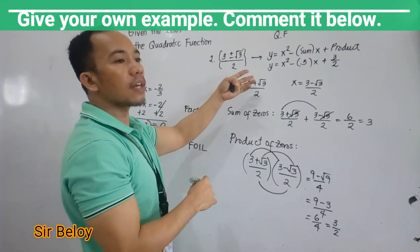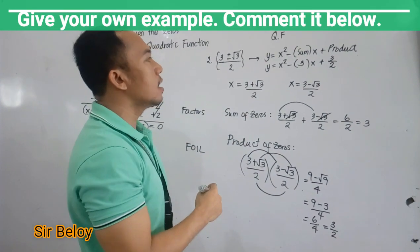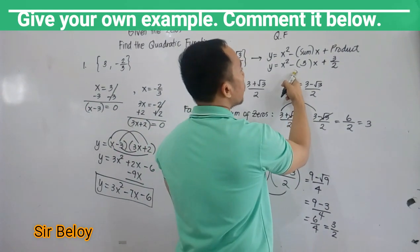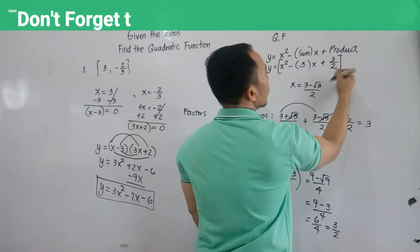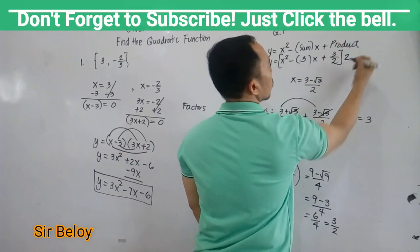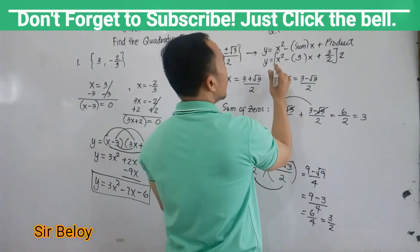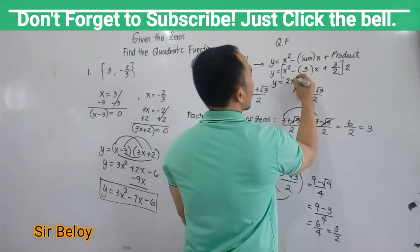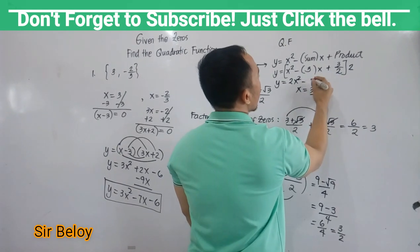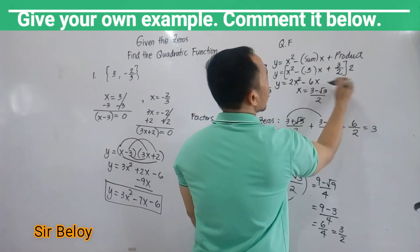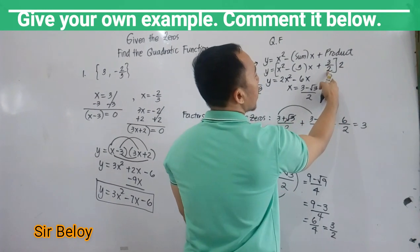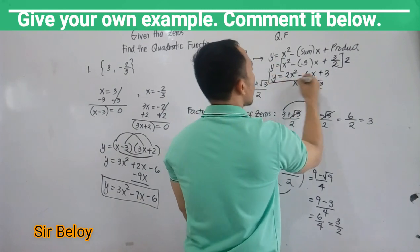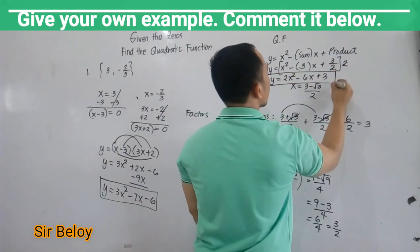Since you have a fraction, we need integral coefficients for the quadratic function. So multiply everything by the denominator which is 2. So our final quadratic function is Y equals 2X squared minus 3 times 2, 6X, then 2 divided by 2 cancels. So this is now plus 3. So this is now your quadratic function.